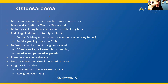Osteosarcoma is the most common non-hematopoietic primary bone tumor, with a bimodal age distribution in patients younger than 20 and greater than 60 years of age. It generally occurs in the metaphysis of long bones such as the knee, but can affect any bone. Radiographically, osteosarcomas are generally ill-defined with mixed lytic and blastic features. Many osteosarcomas will grow and create a Codman's triangle, which is when the periosteum becomes elevated and lifted by an advancing tumor front, leaving behind radiodense reactive periosteal bone formation.